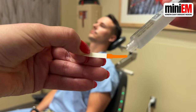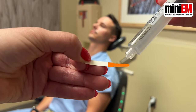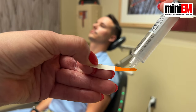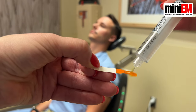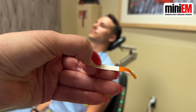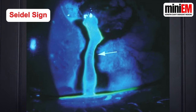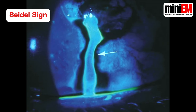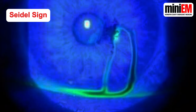If you're worried about a ruptured globe, you can also do the Seidel test. Use about four to five times the amount of dye that you use for the normal fluorescein test — you want to flood the eye with fluorescein for this. If you see a stream of fluorescence, this suggests that there's a communication between the humors of the eye within the globe and the outside world. This is, by definition, a ruptured globe.